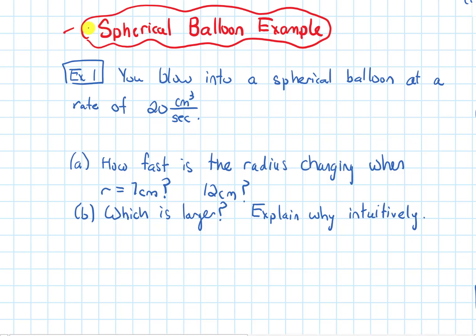In this video, we will do a spherical balloon example in this section on related rates. You blow into a spherical balloon at a rate of 20 centimeters cubed per second. Part A asks, how fast is the radius changing when the radius is 7 centimeters and then when it's 12 centimeters? Part B asks, which is larger between the answers we got in part A, and explain why intuitively.